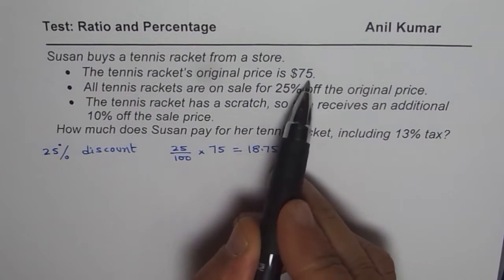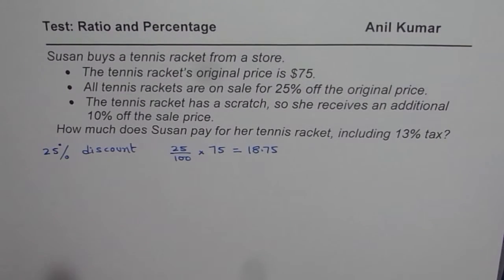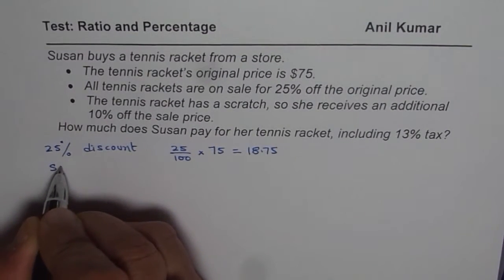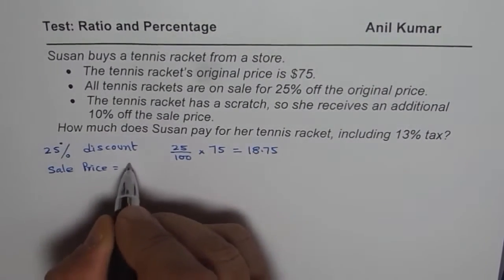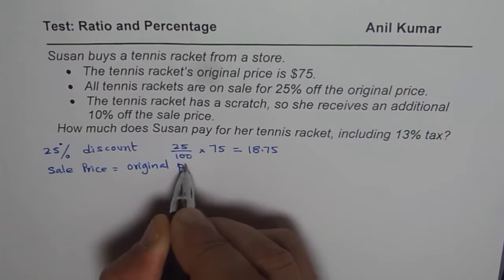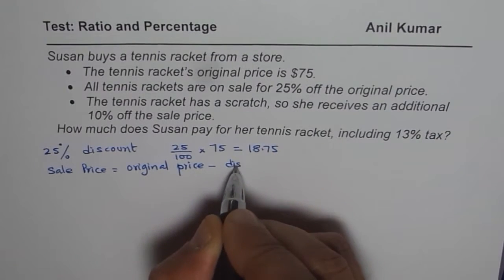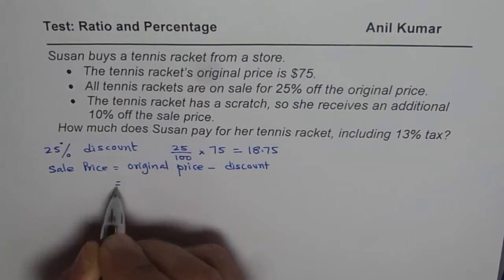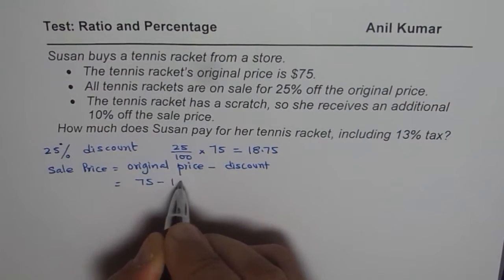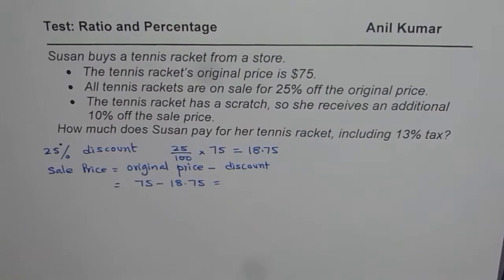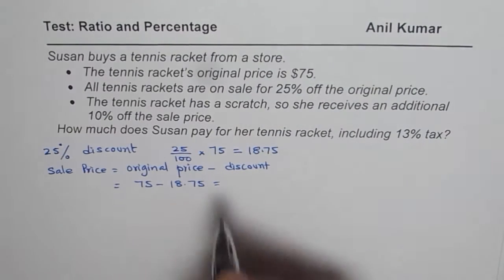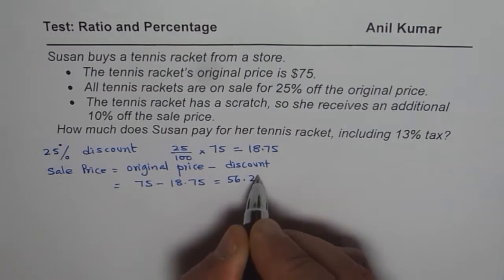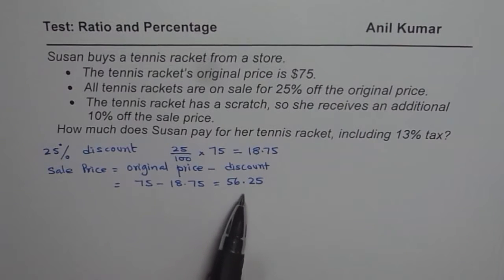The original price is $75, and this discount is on the original price. Therefore, the sale price equals the original price minus the discount. So the sale price is 75 minus 18.75, which equals $56.25. So we get the sale price after the 25% discount.